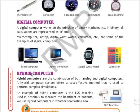Moving to the last type according to purpose: hybrid computers. The word hybrid means a combination of two or more things. Hybrid computers are a combination of both analog and digital computers. A hybrid computer system offers a cost-effective method used to perform complex simulations. An example is the ECG machine found in hospitals, which is used to measure a patient's heartbeat.